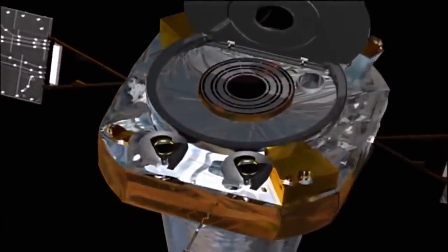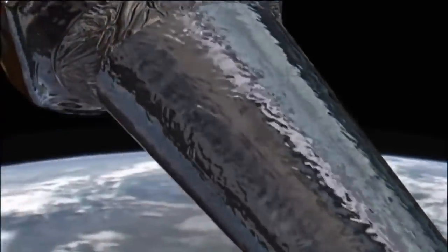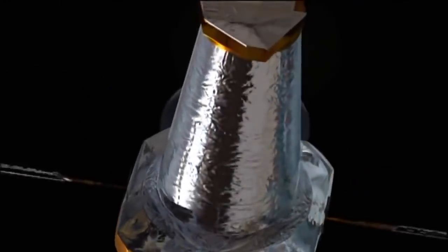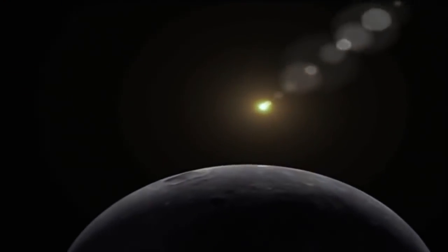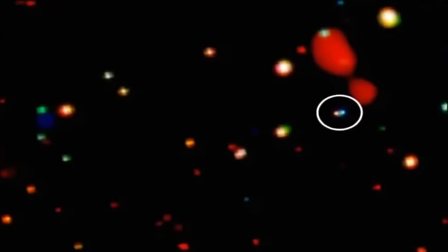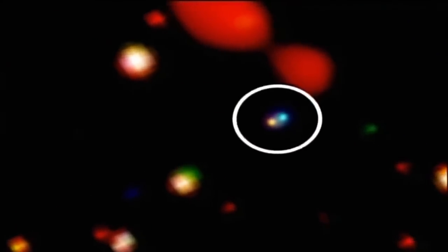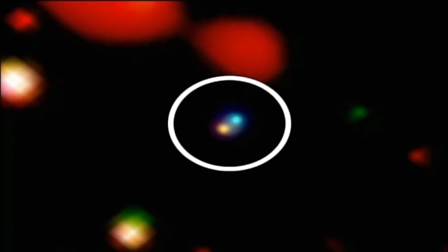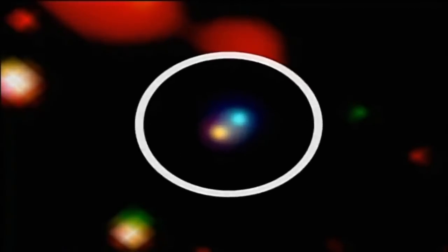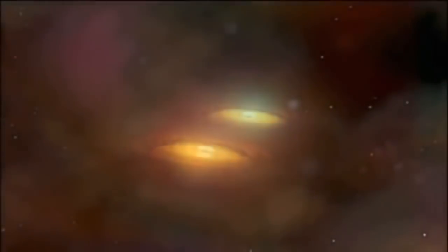The orbiting Chandra X-ray Observatory recently turned up evidence at the centers of galaxies, back in the time of the early universe. These images show its remarkable find, actual supermassive black hole pairs, beginning what astronomers believe is a dance of death.